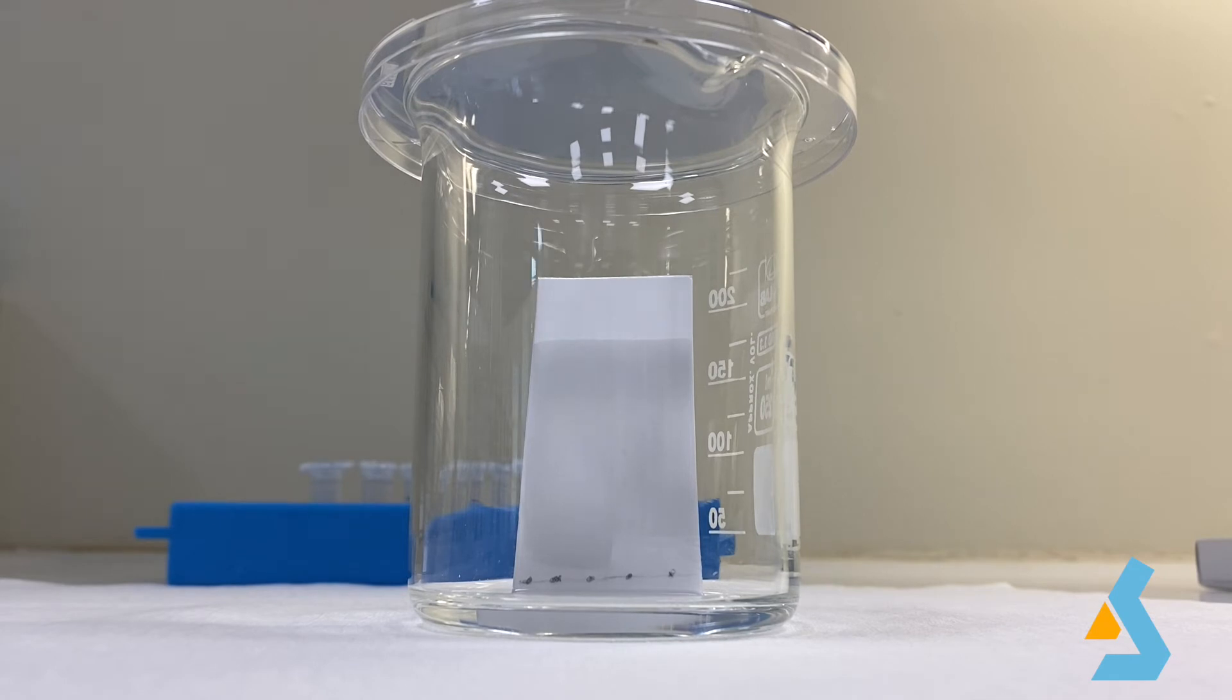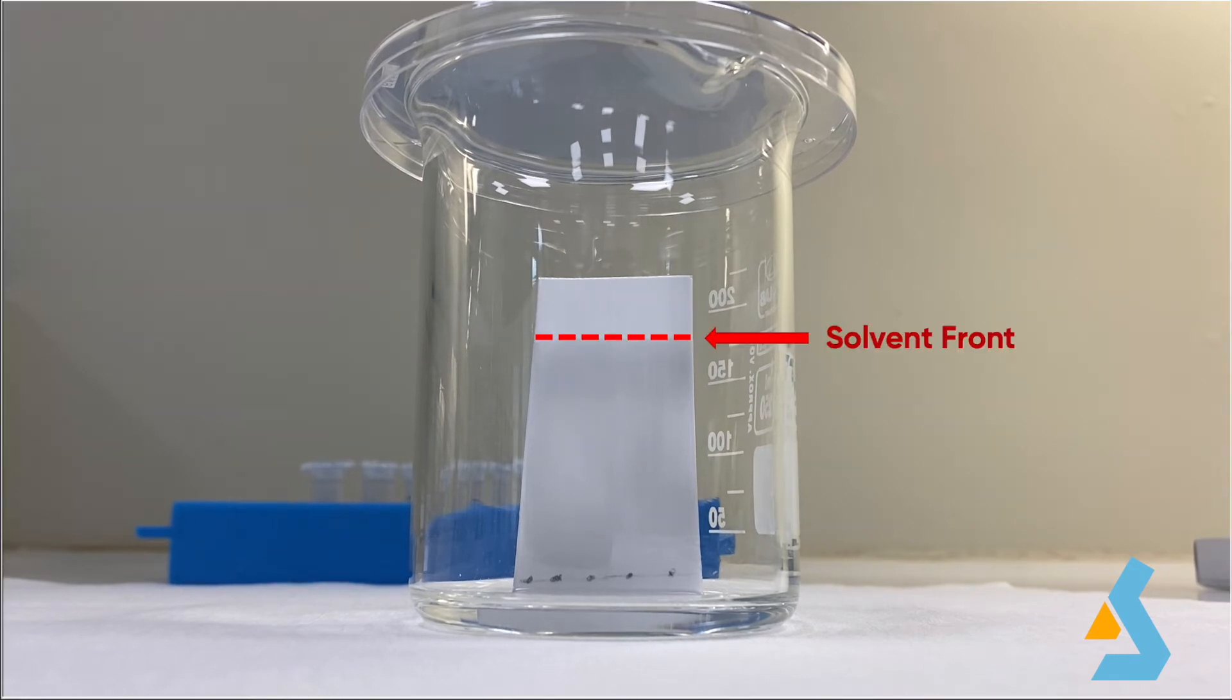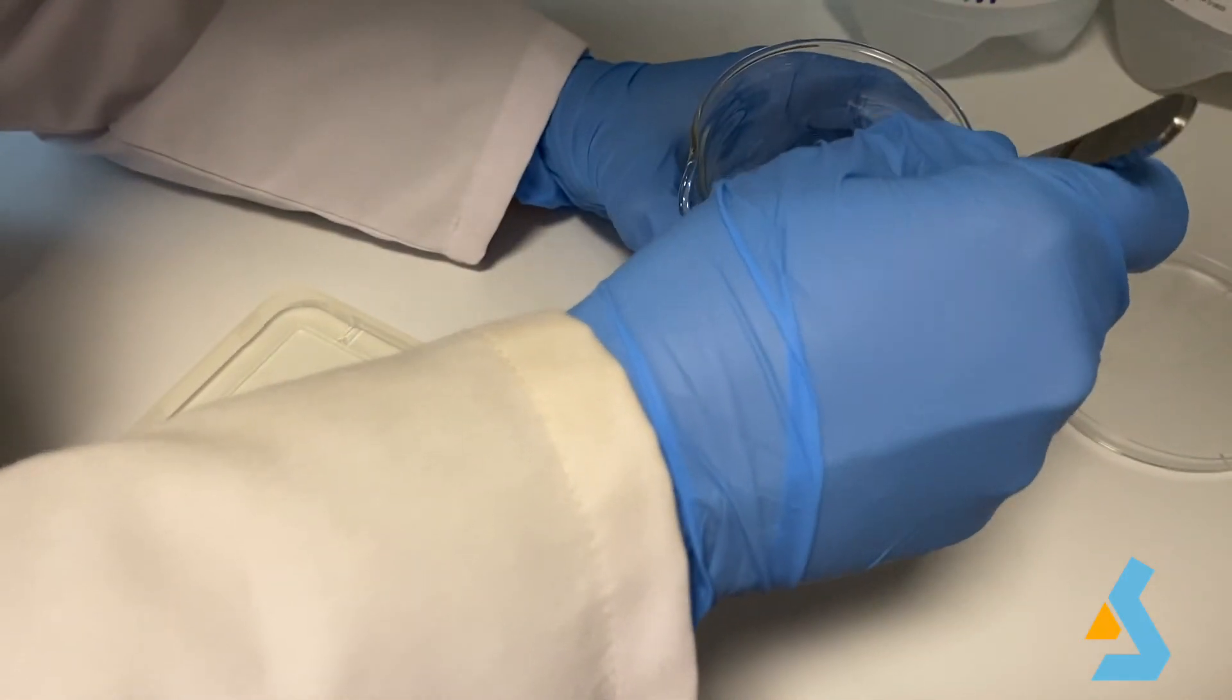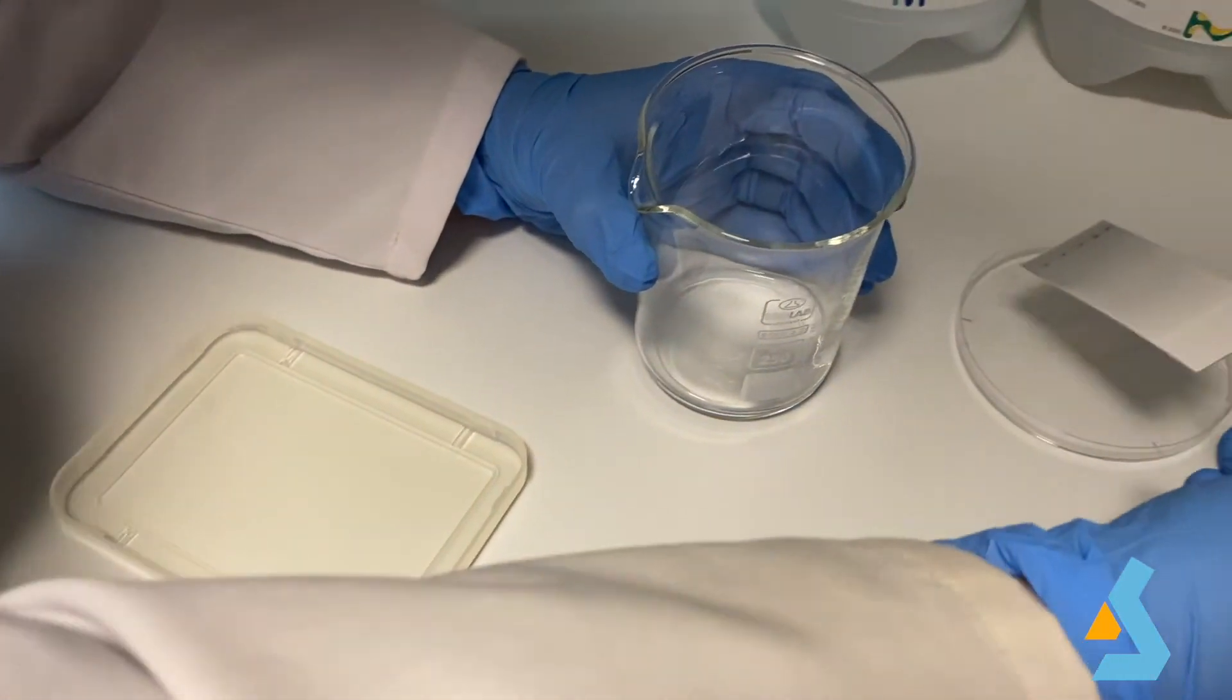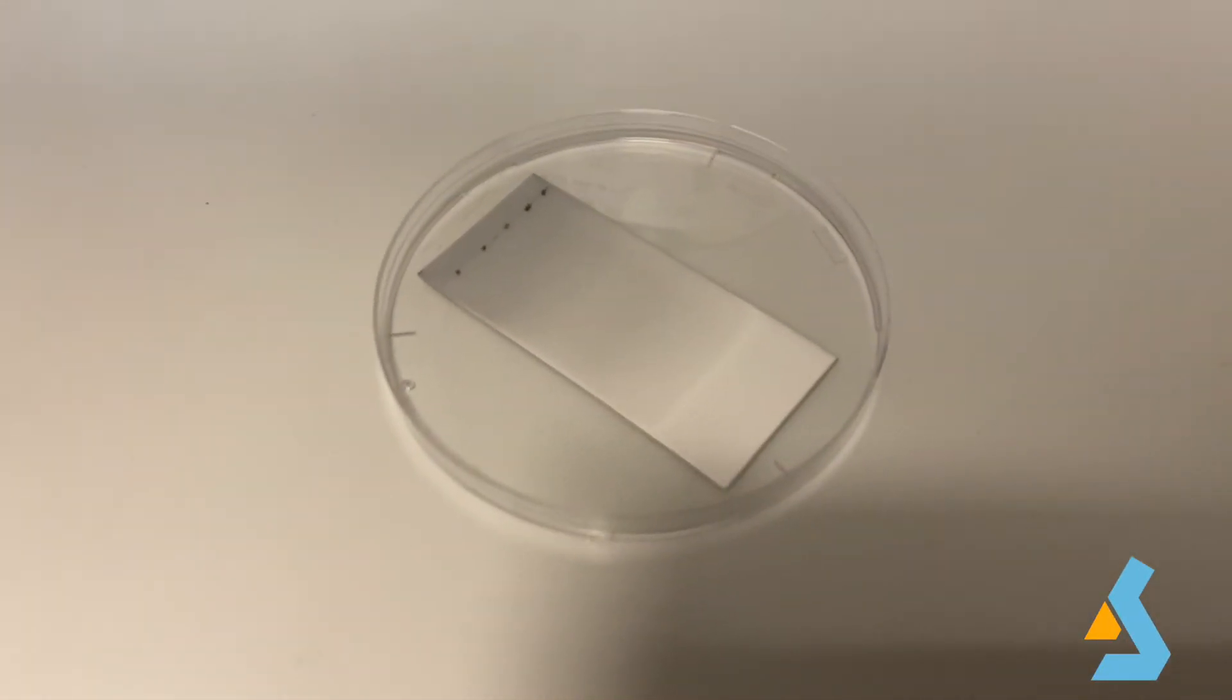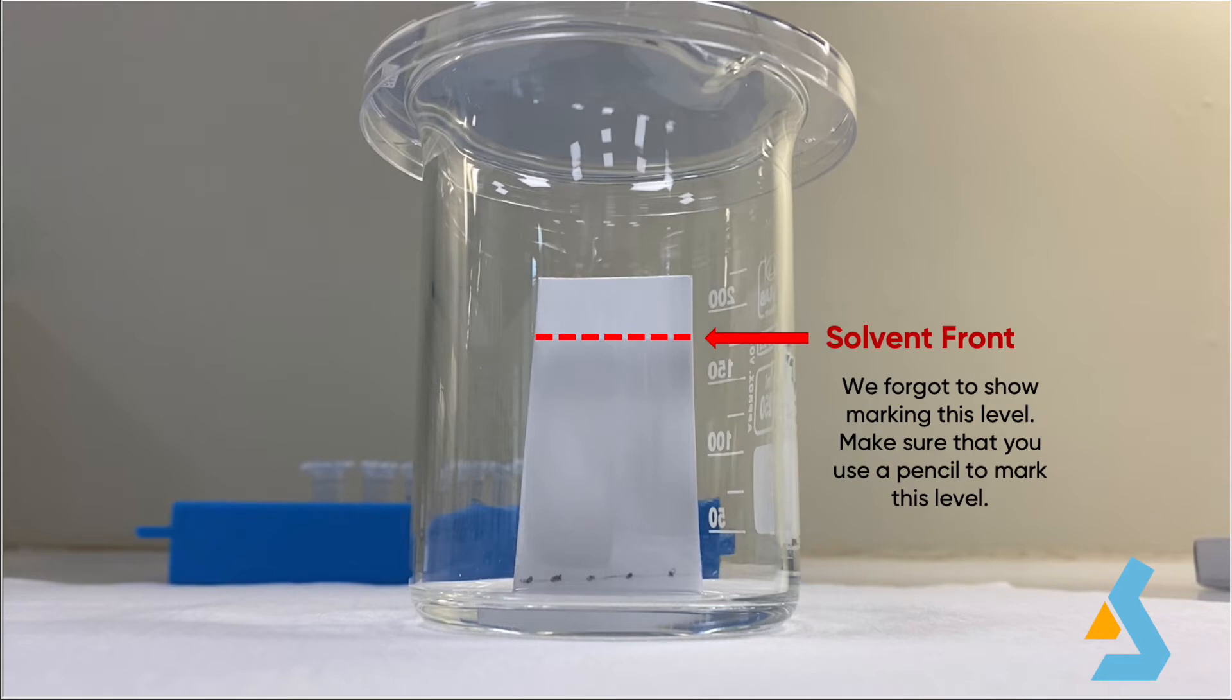It took around an hour for the solvent front to be completed. Now that the solvent front formed, we take the TLC plate out and leave it to dry. It's important to mark the solvent front level while it is still apparent. Make sure to mark with a pencil.